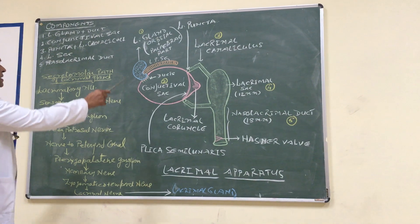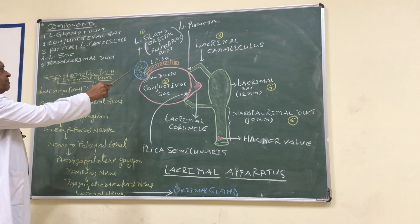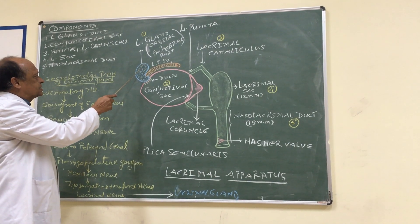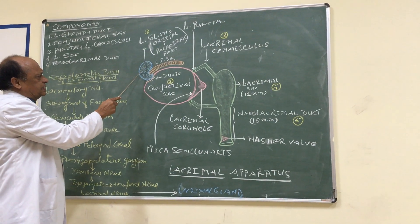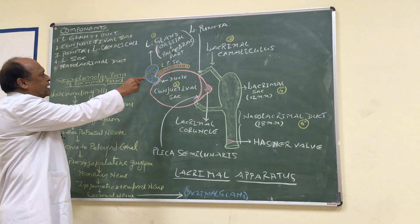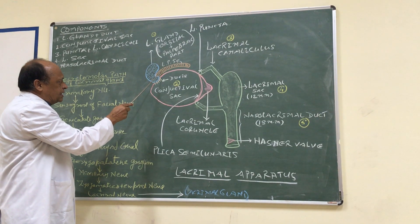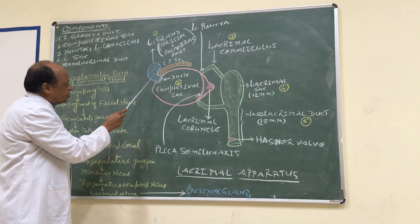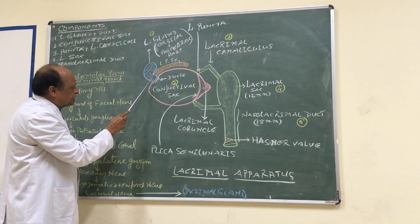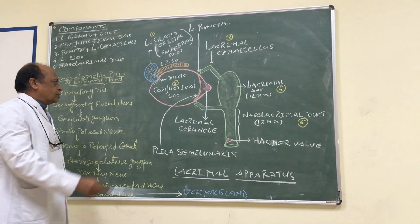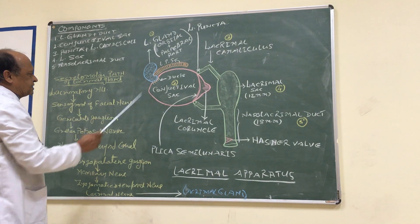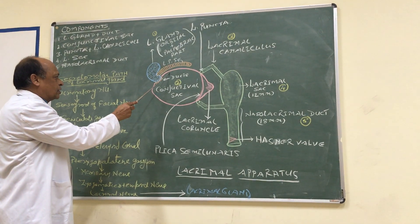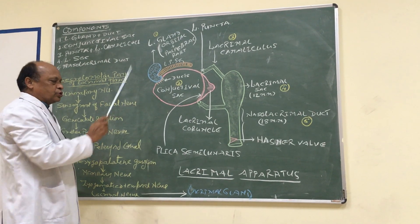Looking at this diagram, here is the lacrimal gland. The orbital part lies in the orbital cavity — specifically in the lacrimal fossa in the anterosuperior part of the orbital cavity. It is somewhat almond-shaped. This small portion is the palpebral part of the lacrimal gland, which lies deep to the lateral part of the levator palpebrae superioris muscle. These two parts continue with each other around the lateral border of the levator palpebrae superioris. The gland secretes lacrimal fluid through 12 to 15 ducts, which open into the lateral part of the superior fornix.